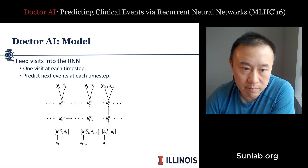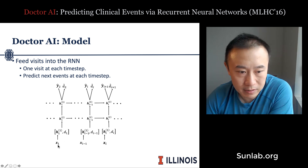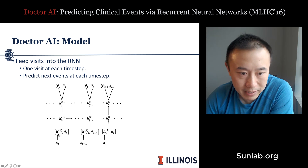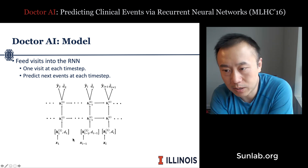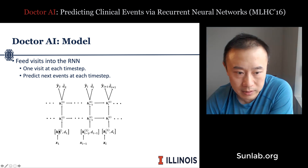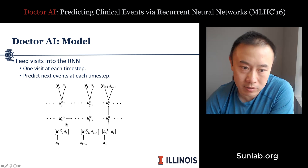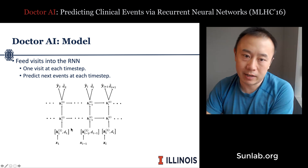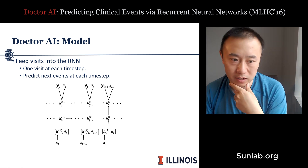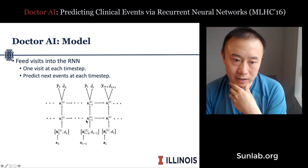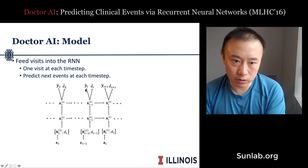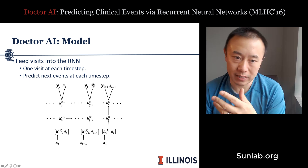The Doctor AI model is a two-layer RNN implemented with GRU. The multi-hot input vectors go through a linear embedding to produce an embedding vector h, which is then concatenated with a scalar duration value representing time between consecutive visits. This concatenated vector is fed into two stacked RNN layers. Finally, the model predicts two things: the diagnosis codes for the next visit (y-hat) and the duration to the next visit.